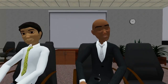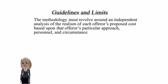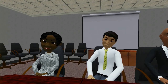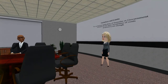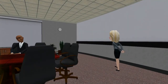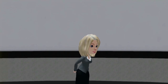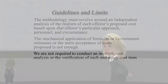First, the methodology must revolve around an independent analysis of the realism of each offeror's proposed costs based upon that offeror's particular approach, personnel, and circumstances. The methodology must be designed to reasonably predict the probable cost that will result from the performance of the proposed technical approach by the proposed personnel. Second, the mechanical application of formulas or government estimates or the mere acceptance of costs as proposed is not enough — there must be some independent analysis and judgment applied in the methodology. Third, we are not required to conduct an in-depth cost analysis or the verification of each and every cost item, but the methodology must support the exercise of informed judgment by the contracting agency.